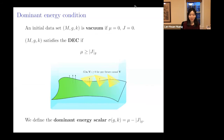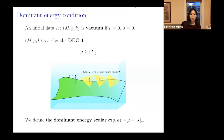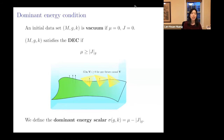In the Riemannian case, sigma is exactly half of the scalar curvature, but sigma also generalizes scalar curvature in other ways we will see later. You might think of defining a scalar quantity as mu² − |j|², but since the norm of j is only a Lipschitz function in general, we find sigma is the right generalization. So for the following talk, if you get confused about the Einstein constraint map or the dominant energy condition, just think of sigma as the scalar curvature.